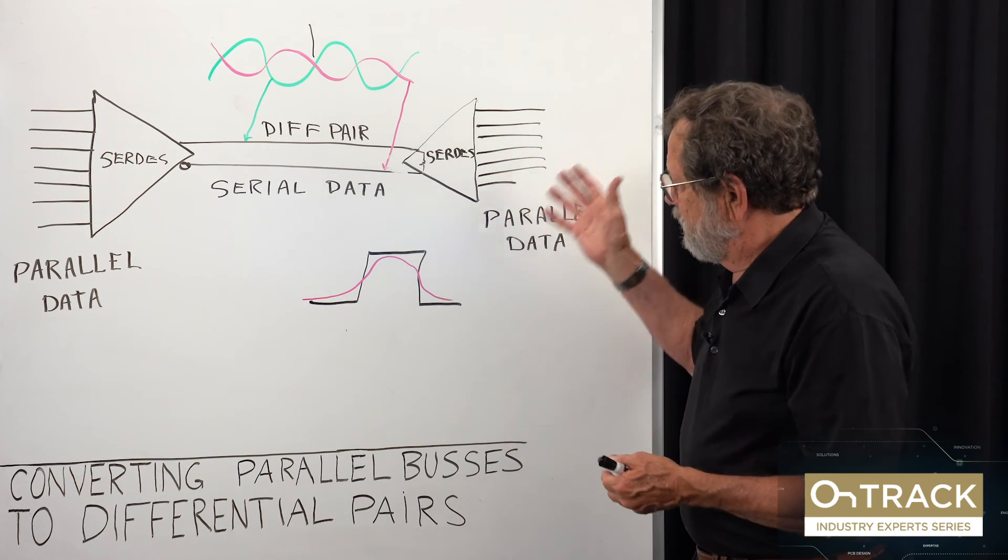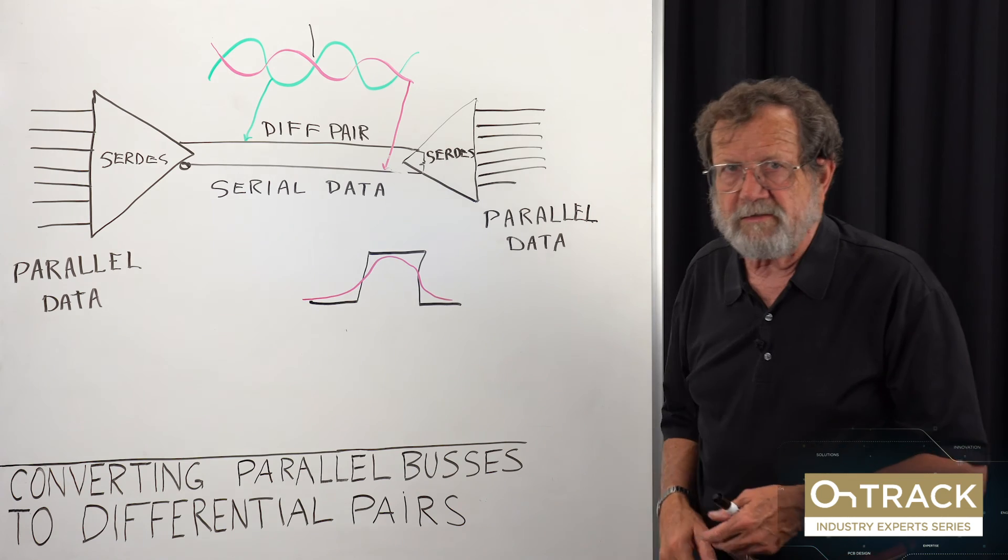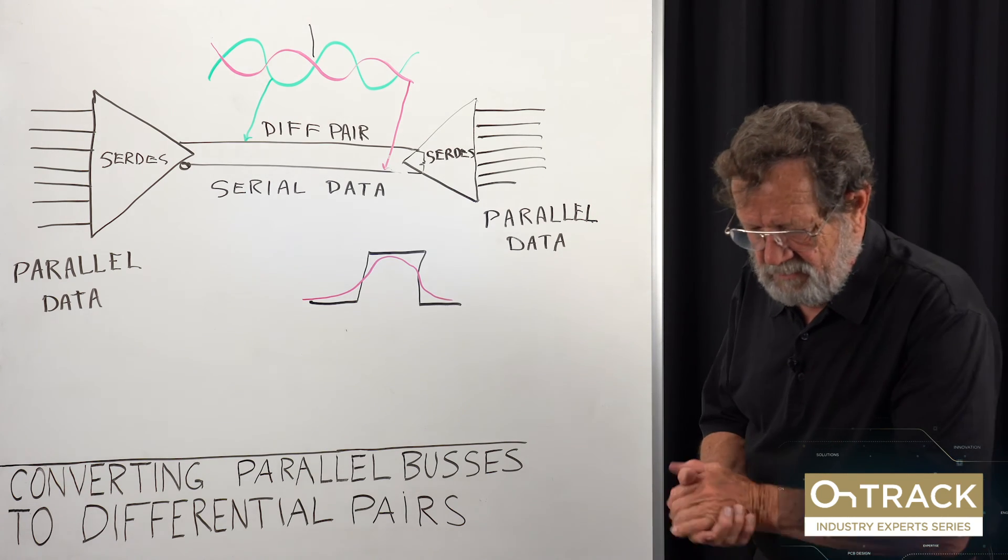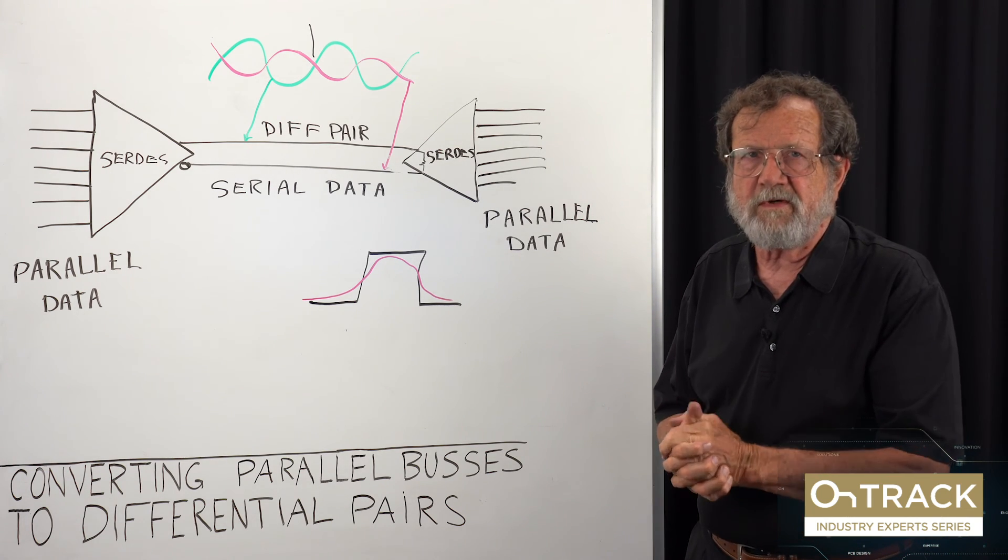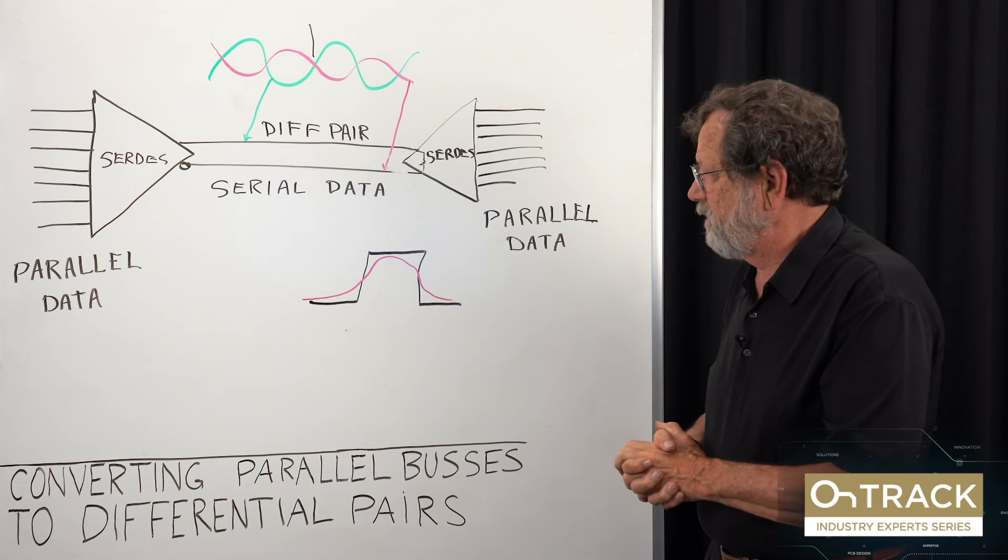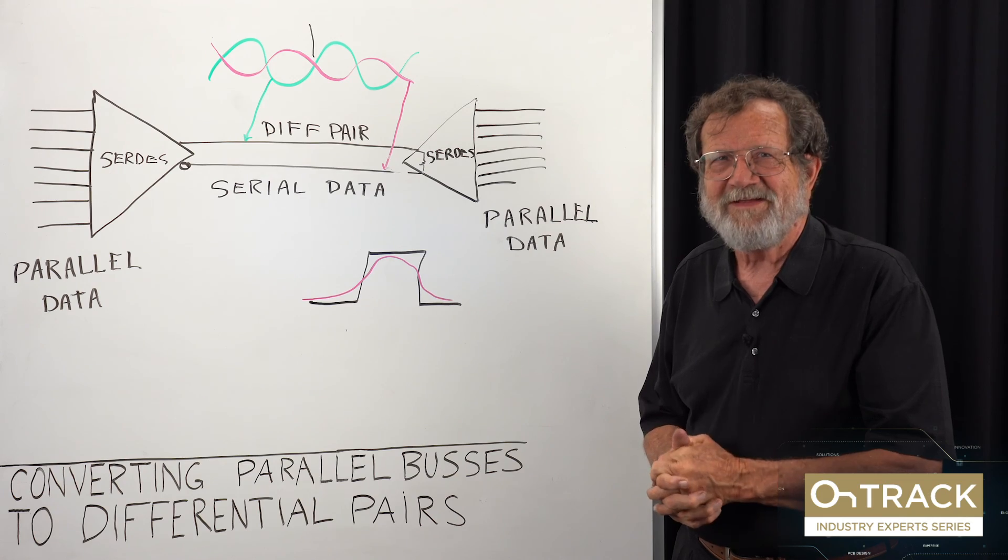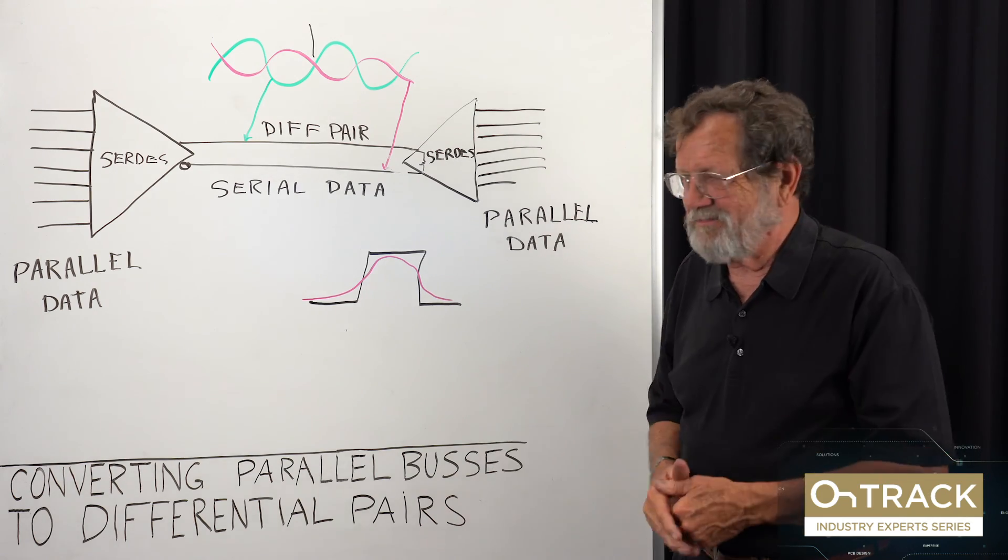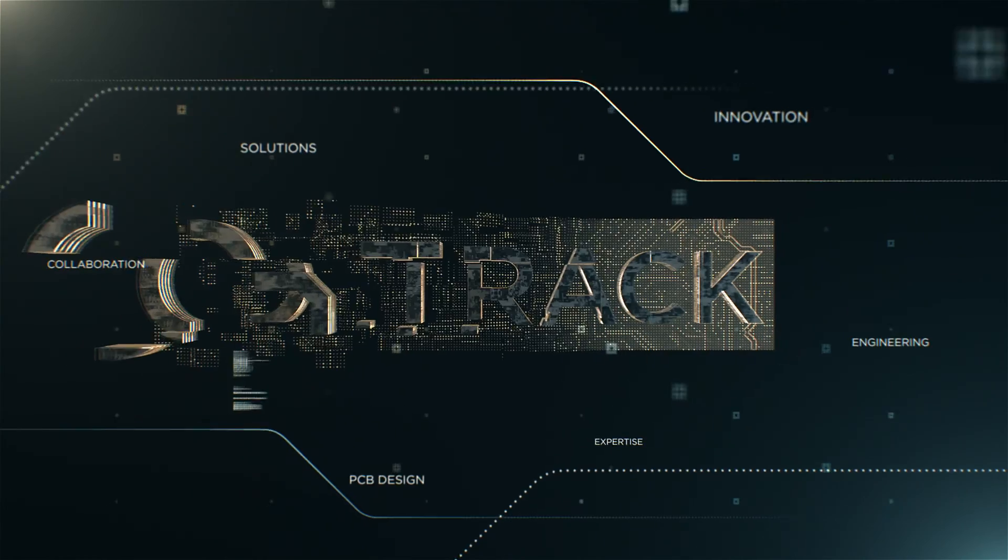So I hope that helps a little bit with why we're using differential pairs. It has made possible things that were not possible before. And I don't know where the limit is. I used to think I did, but at any rate, that's differential signaling. Thank you.